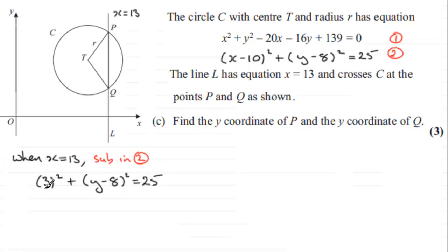We know 3 squared is 9. So if I subtract 9 from both sides, I'm going to be left with (y - 8)² equals 25 minus 9. And we know that that is 16. So you've got (y - 8)² equals 16.